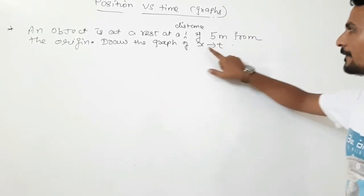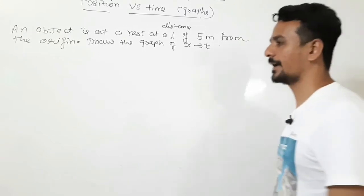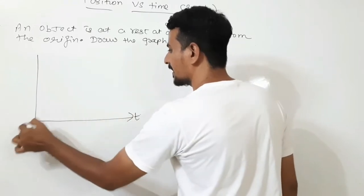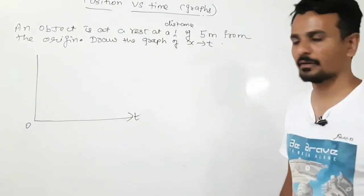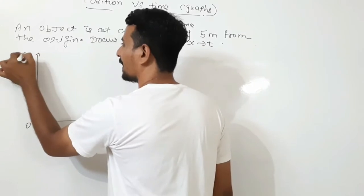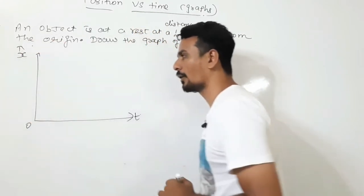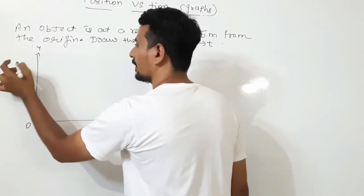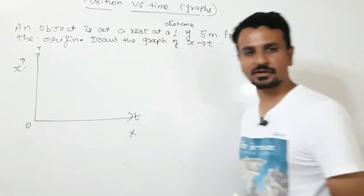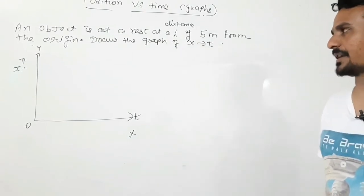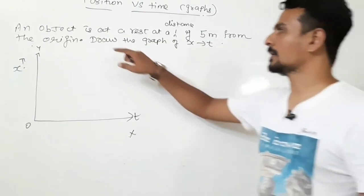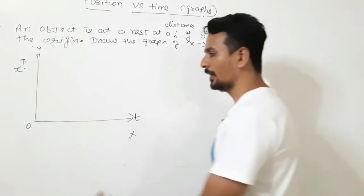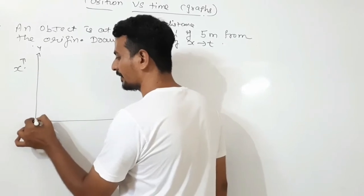Let us take time along the x-axis and position of the object will be represented by x along the y-axis. This is your x-axis and this is your y-axis. x represents the position of an object, t represents the time. According to the situation, an object is at rest at a distance of 5 meters from the origin. The intersection of all the axes is known as the origin.